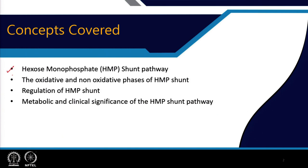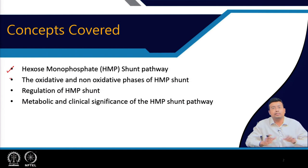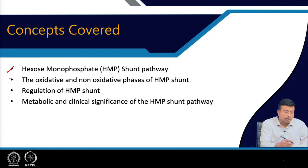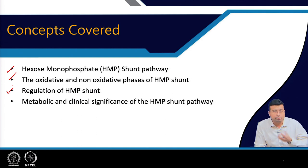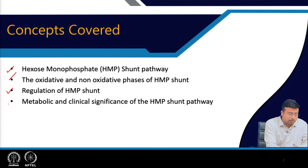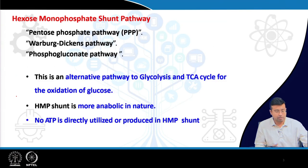The hexose monophosphate shunt pathway and how it can be divided into two phases — oxidative and non-oxidative — were covered in the last class. Today we will be continuing with the regulation of HMP shunt, how the rate is controlled, and also the metabolic and clinical significance of HMP shunt pathway and why it is so important for us.